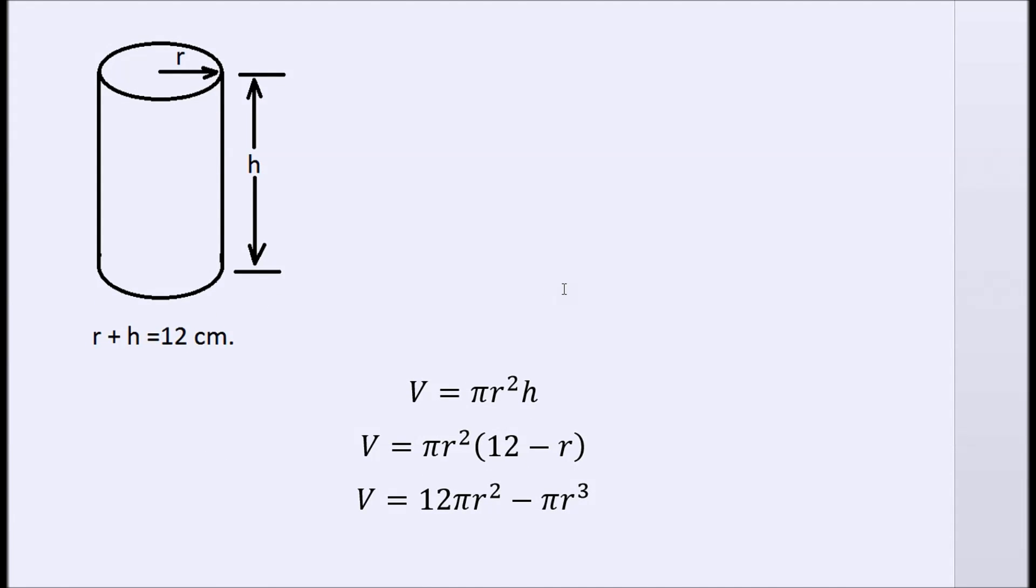We have our cylinder and you know that the volume of the cylinder is equal to the area of the base times the height. Pi r squared is the area of the base times h. We're going to substitute for h 12 minus r, so we have everything in terms of r. So we have pi r squared times 12 minus r, or 12 pi r squared minus pi r cubed.